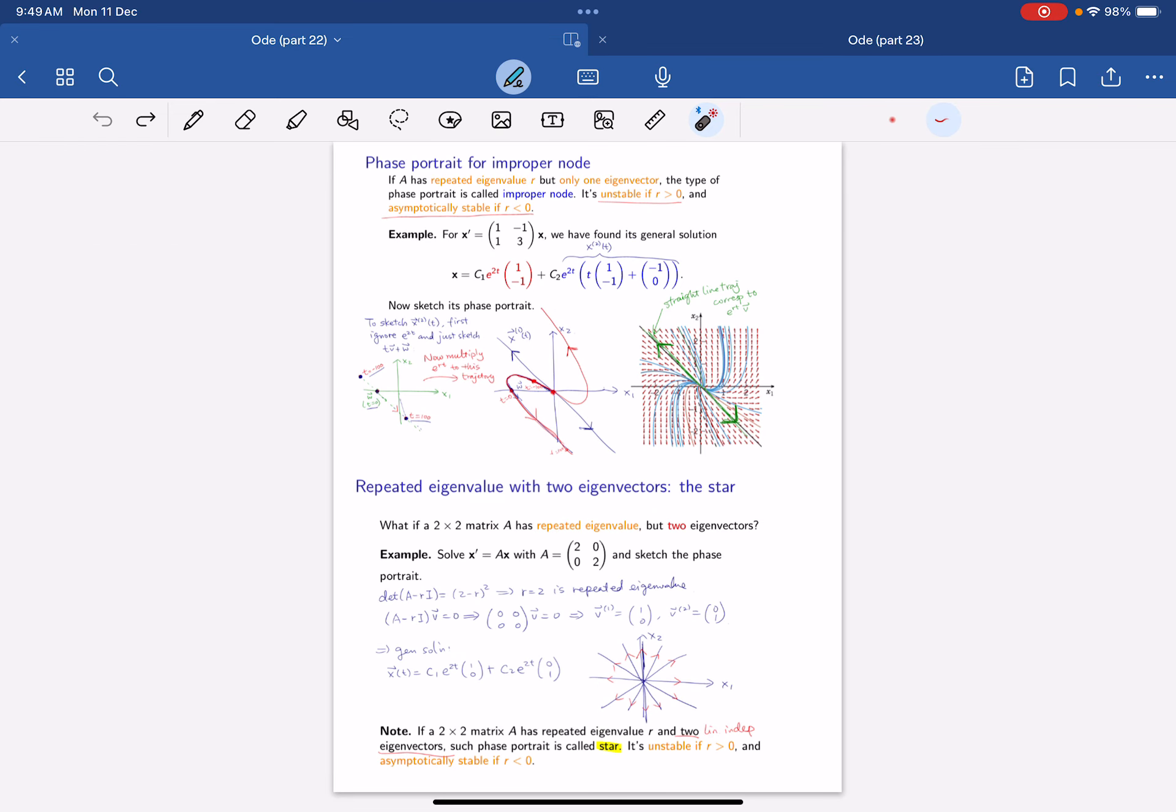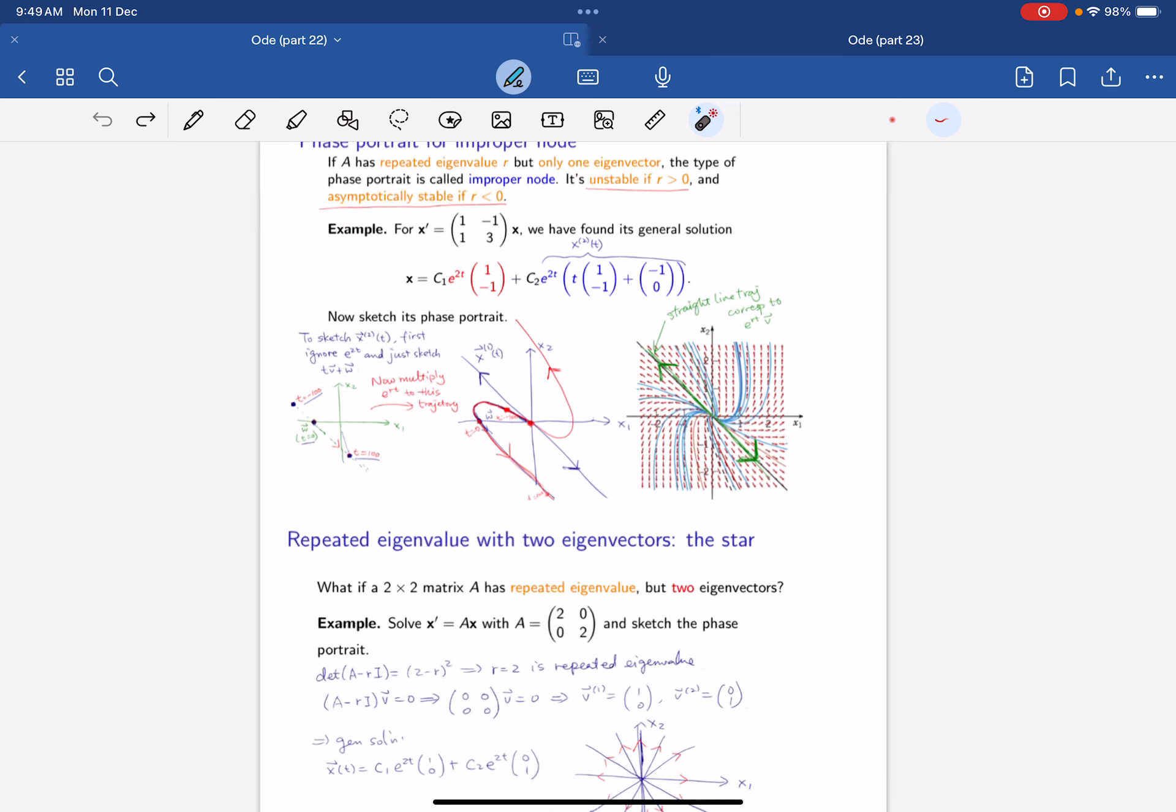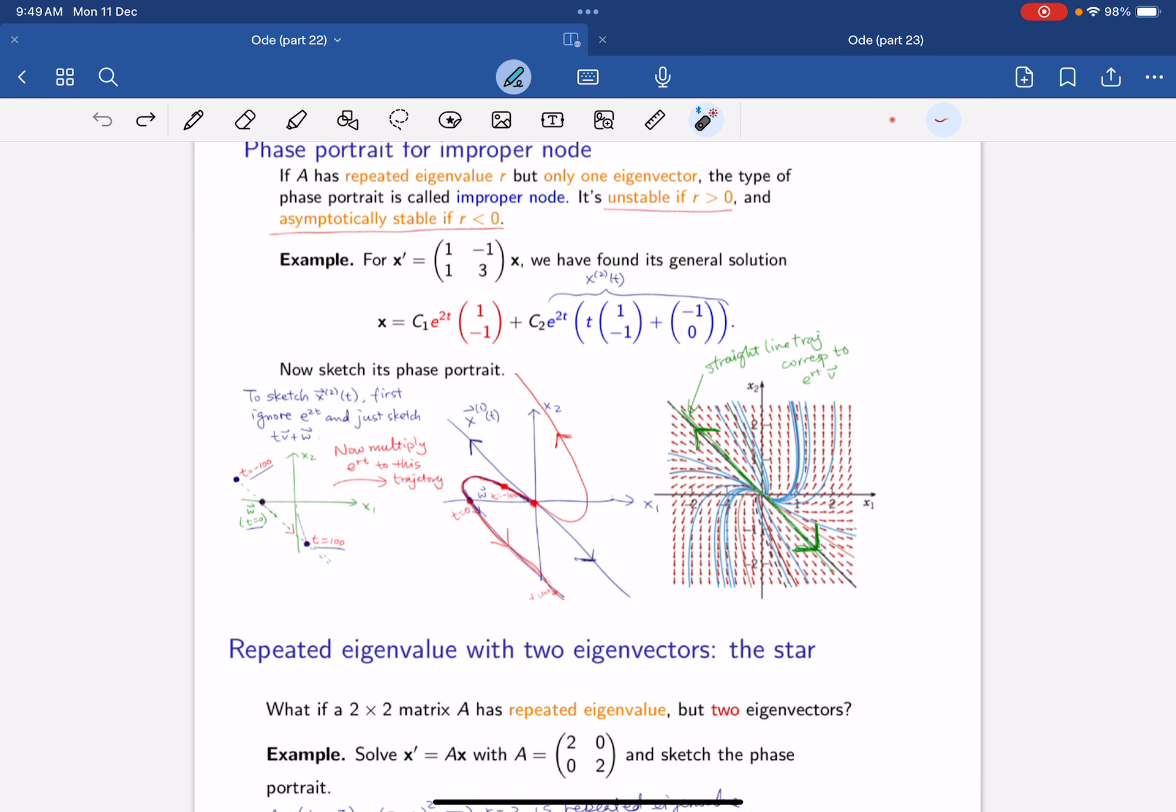So lastly, we'll talk about the stability of the x equals to 0, the node at that point. So if A has a repeated eigenvalue, then the phase portrait we draw will be called an improper node. So if R is larger than 0, meaning the eigenvalue is more than 0, then it's unstable, because it grows exponentially outward. And if it's less than 0, then it's asymptotically stable.